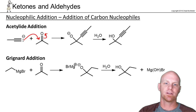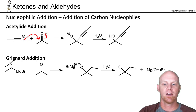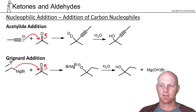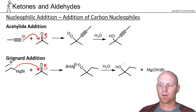Same thing with Grignard addition. We learned that in dealing with a Grignard reagent, you treat it as if it's the equivalent of a carbanion. It's going to do the same thing — attack the carbonyl — and to our adduct we'll add either water or dilute H₃O⁺, and we'll get the corresponding alcohol.